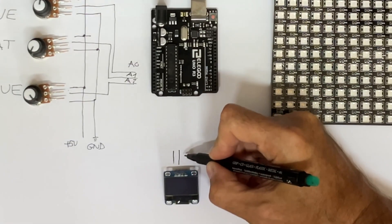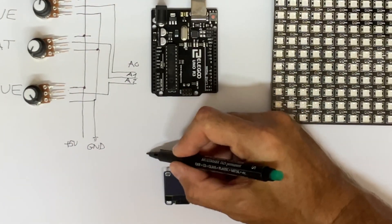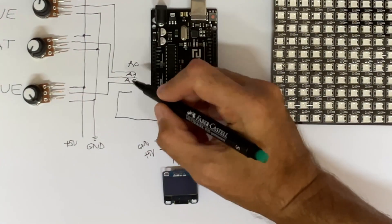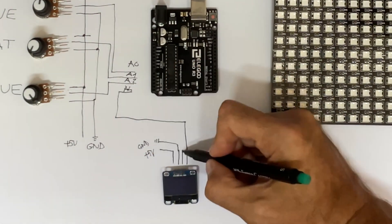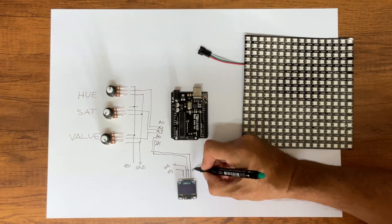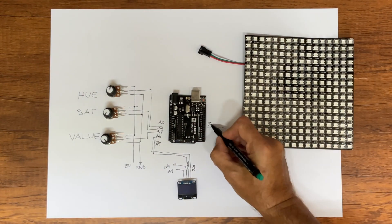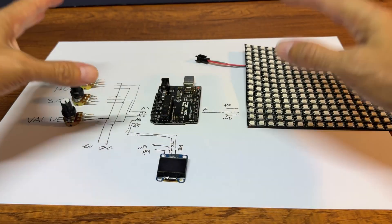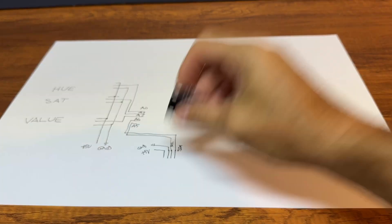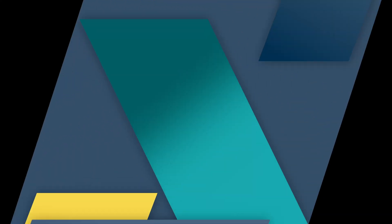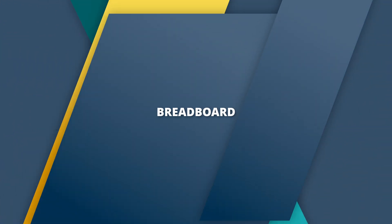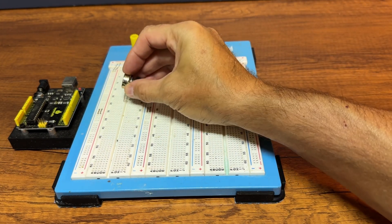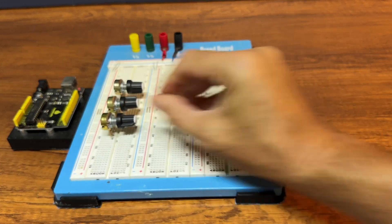We will use the display to see the value that we set for Hue, Saturation, and Value. The RGB LEDs will show the actual color that we have selected.